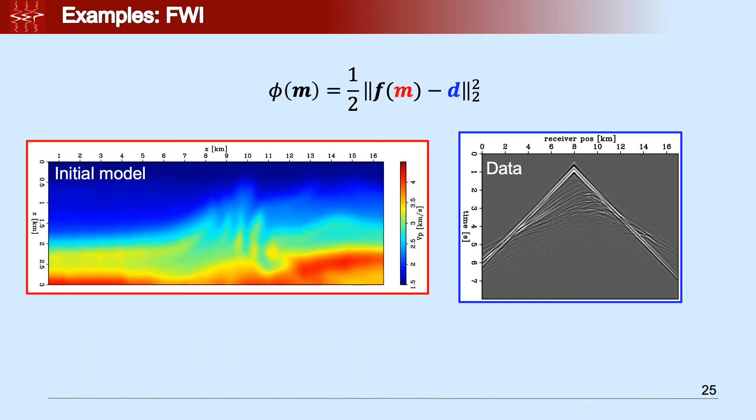Here we're minimizing just the L2 norm difference of the model data, F of M, starting with the model shown here in red, the initial model. We just minimize the difference with the observed data, the blue D, here.